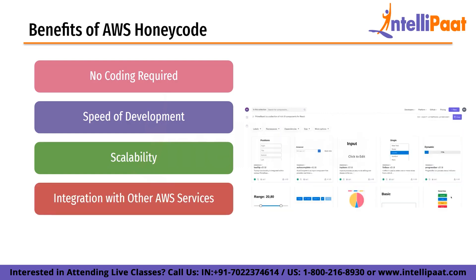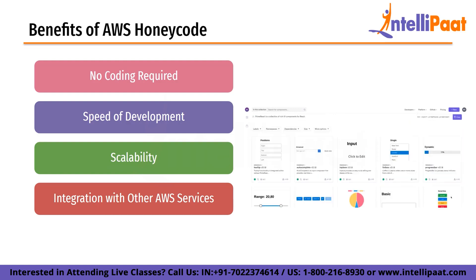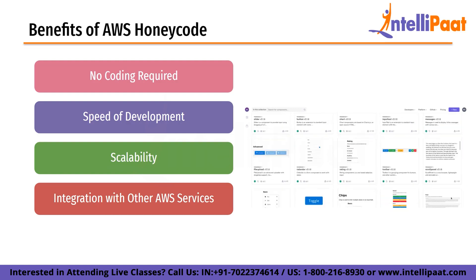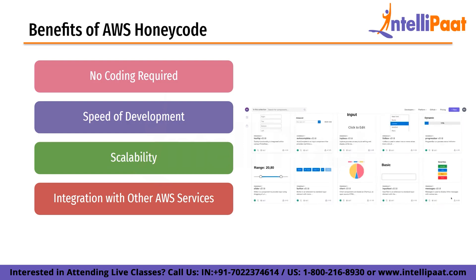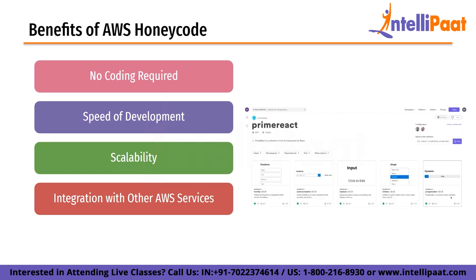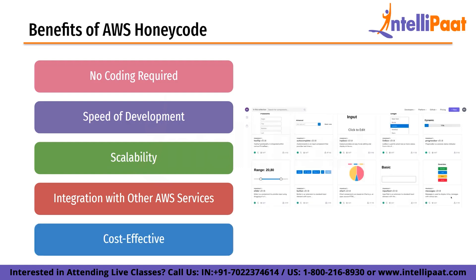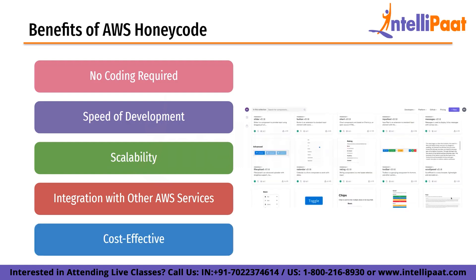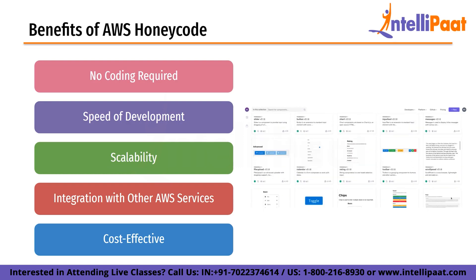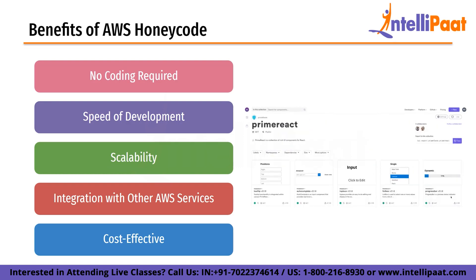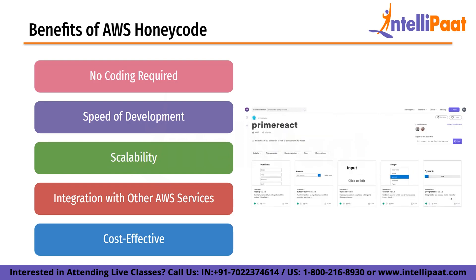Next is integration with other AWS services. Honeycode integrates seamlessly with other AWS services such as DynamoDB, Lambda and S3, allowing developers to create more complex apps that can leverage the power of other AWS services. And finally, it is cost-effective. Because Honeycode requires no coding knowledge, businesses can save money on hiring developers or buying expensive software licenses. Additionally, Honeycode pricing is based on usage, meaning that businesses only pay for what they use.